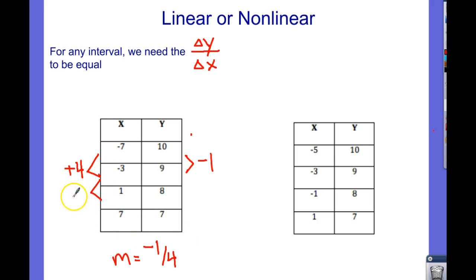Negative 3 to positive 1, that's plus 4. 9 to 8, that's negative 1. So that works. I have negative 1 over 4 again. Well, you got to make sure that you check them all. Because we'll see 1 to 7 is a positive 6, and 8 to 7 is a negative 1. That is a ratio of negative 1 over 6, which is different than the rest of the intervals. So, this here would be nonlinear.